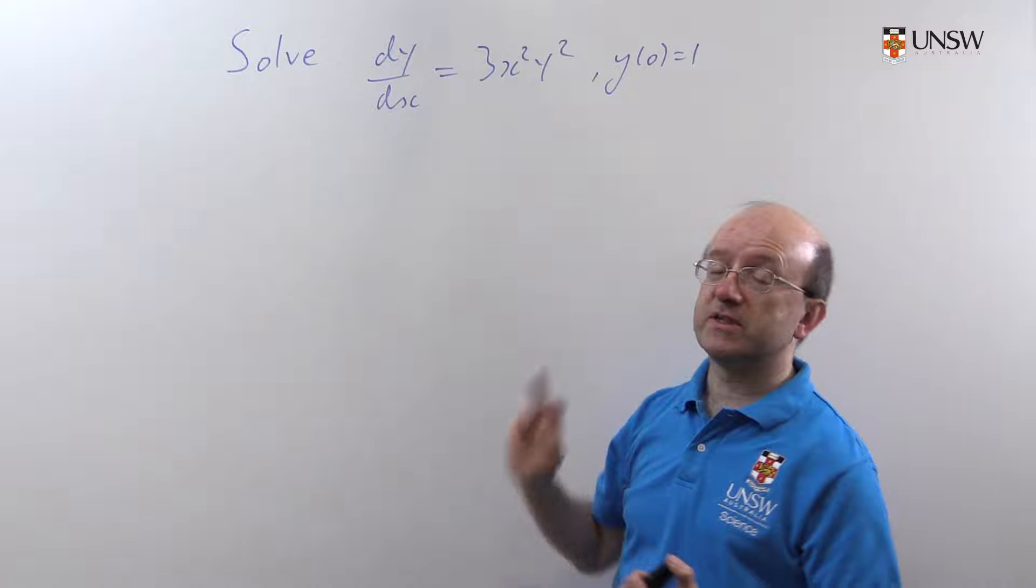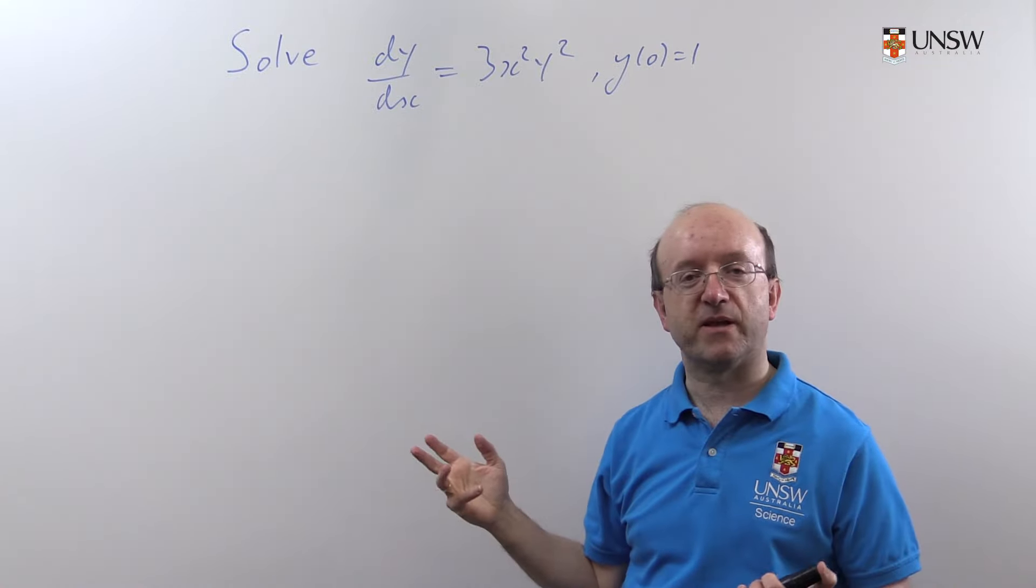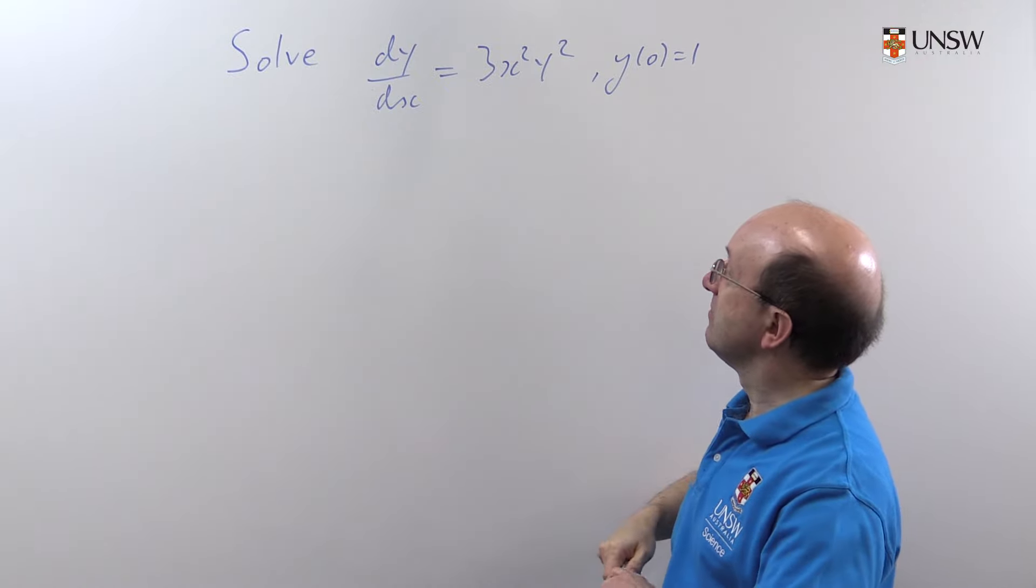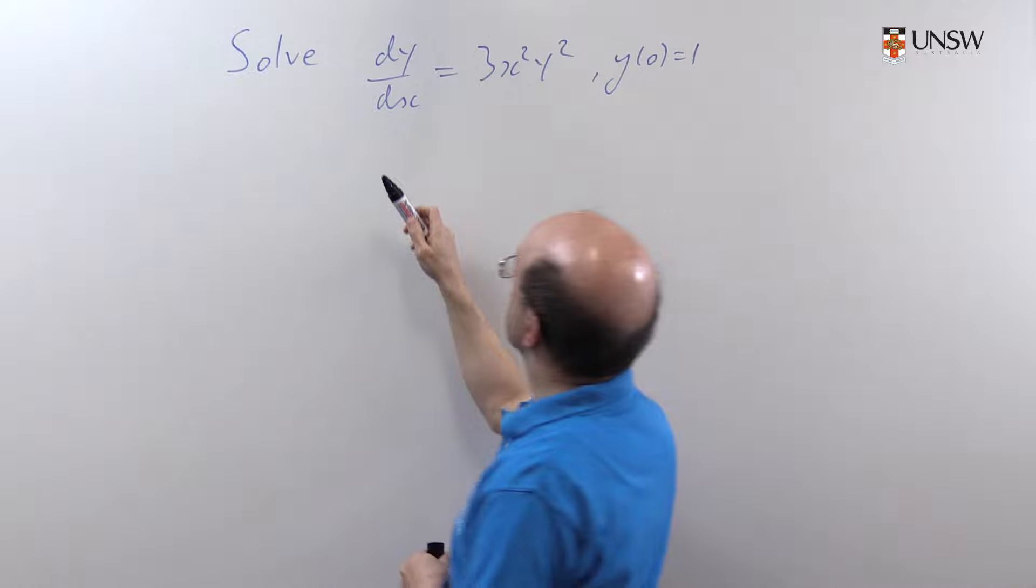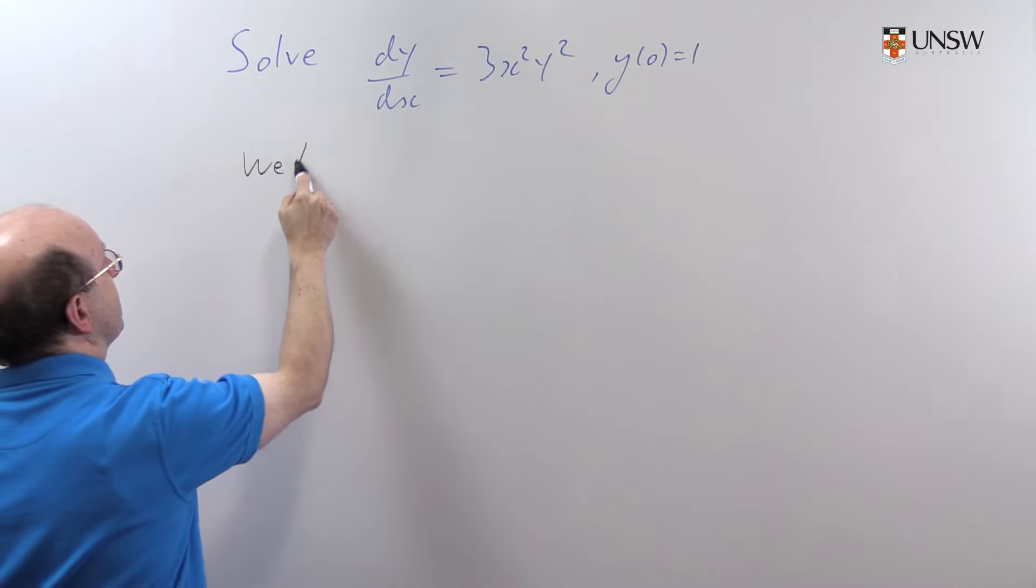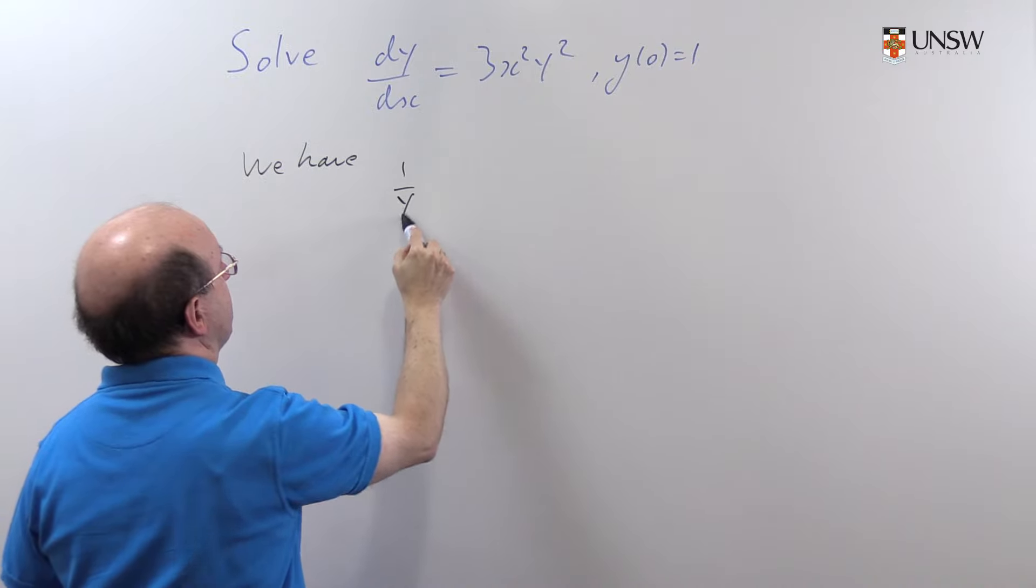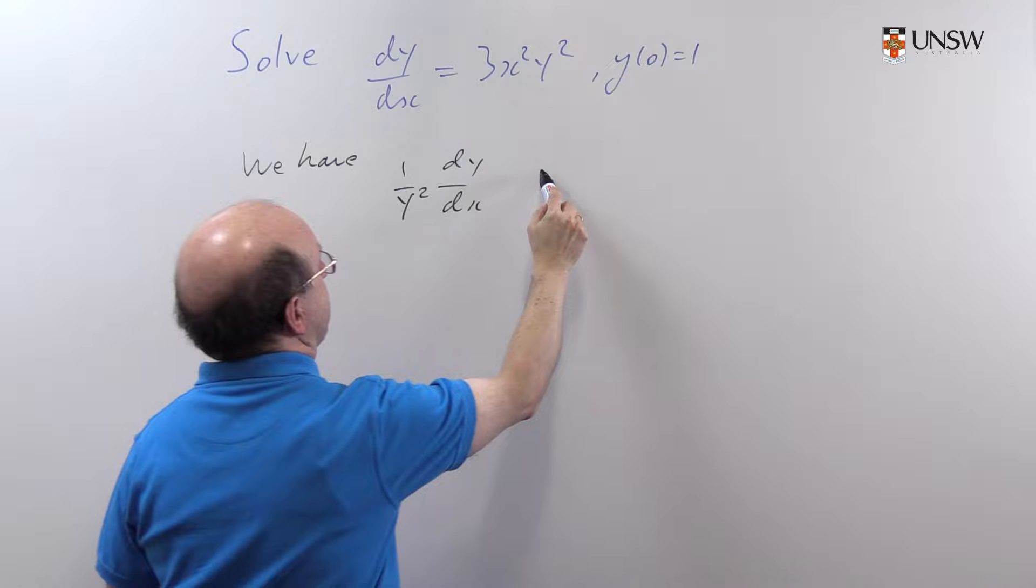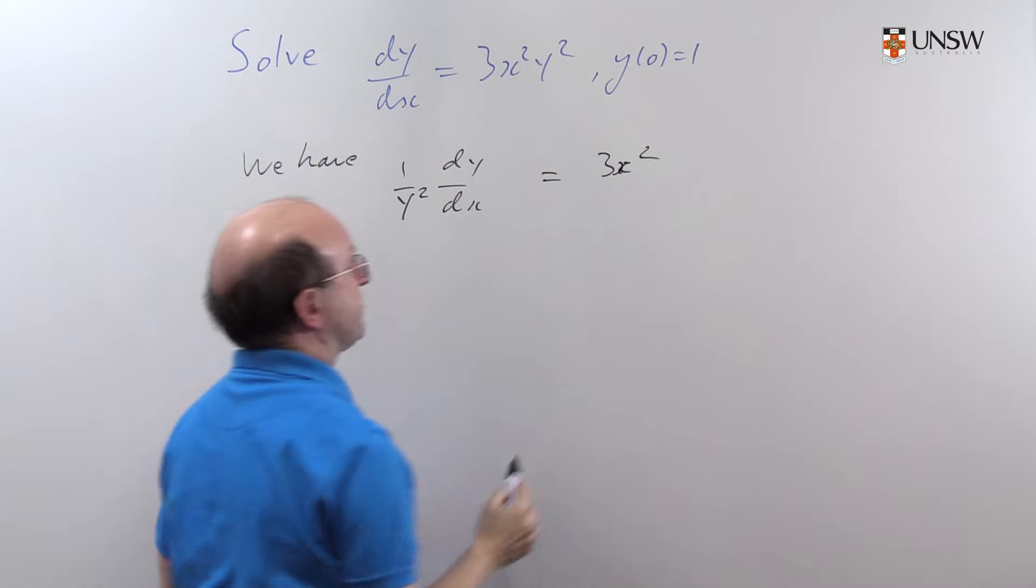Now with a separable differential equation, all we need to do is essentially multiply out to put all the dependent variable on one side. So in this case we're going to divide through by y². We're going to have 1/y² dy/dx = 3x².